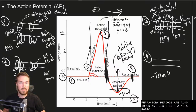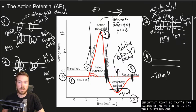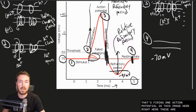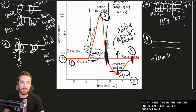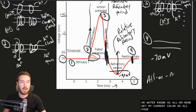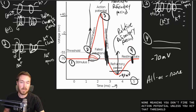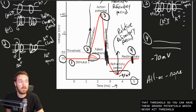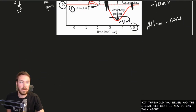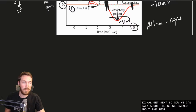That's the basics of firing one action potential. Also visible in the graph are graded potentials — failed initiations. Action potentials are all or none: you don't fire an action potential unless you hit threshold. You can have graded potentials that never reach threshold, meaning the signal is never sent.